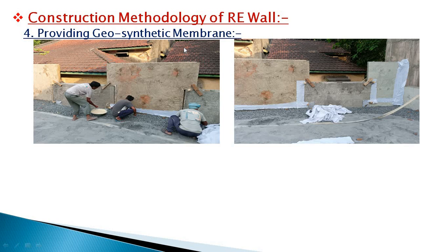We provide the geogrid for a different purpose and the geosynthetic membrane for a different purpose. The geosynthetic membrane is provided only for design purposes. This is the RE panel, this is the geosynthetic membrane, and this is the filter media — in this case coarse aggregate is used as filter media, and this is the fly ash filling.